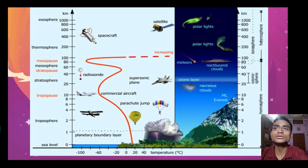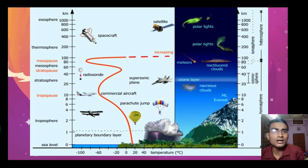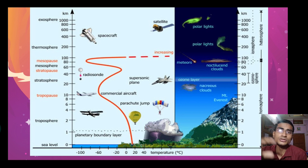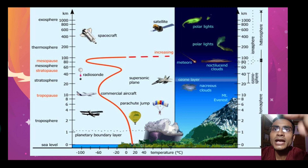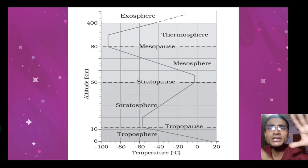After tropopause, stratosphere begins. Where stratosphere ends, that boundary is called stratopause. Then mesosphere starts; where it ends is the mesopause. Then thermosphere begins, and after thermosphere starts exosphere — the region beyond is called thermopause. In exosphere, spacecraft travel and satellites orbit. Radio sondes operate in stratosphere. Supersonic planes fly in stratosphere. Commercial aircraft fly from the upper troposphere up to maximum stratosphere. Mount Everest is at 8848 meters height.